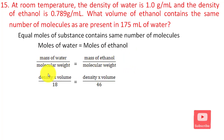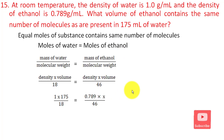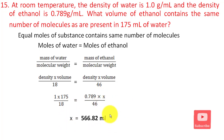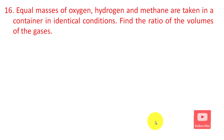Mass equals density multiplied by volume. Setting mass of water divided by molecular weight of water equal to mass of ethanol divided by molecular weight of ethanol, and substituting density times volume for mass, we can solve for the volume of ethanol. The answer is approximately 566 mL.